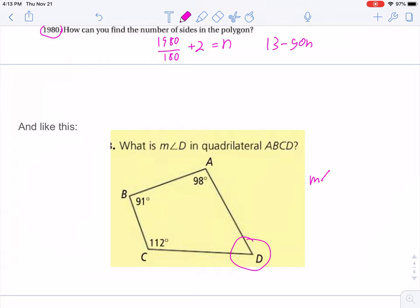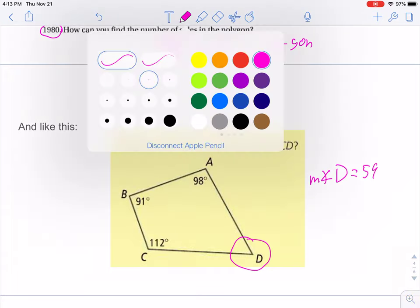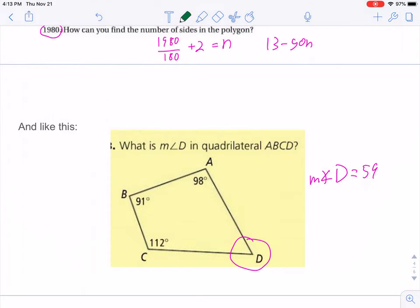That's right. The measure of angle D is 59. Because we know that 91 plus 98 plus 112 plus the measure of angle D would equal 360. And we can do some algebra.